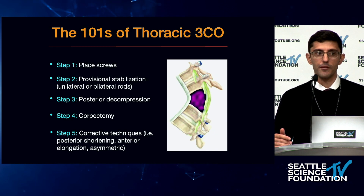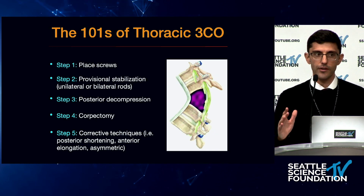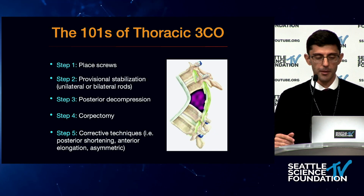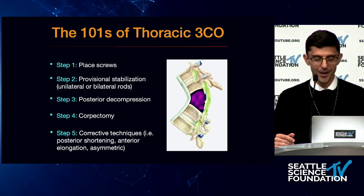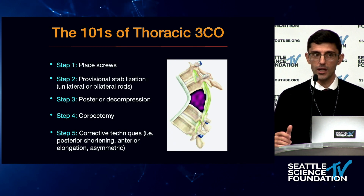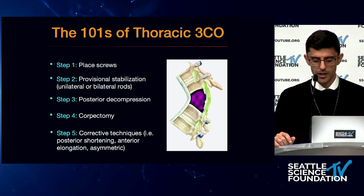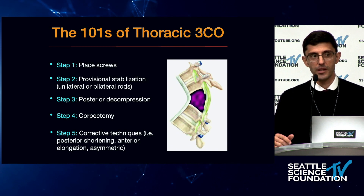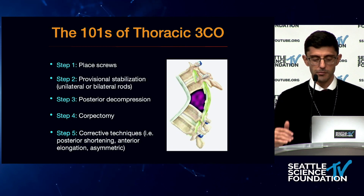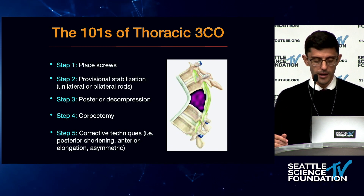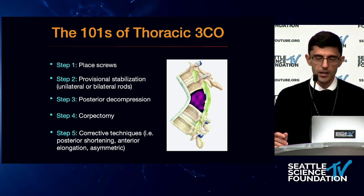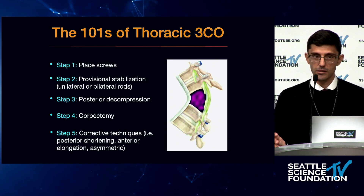Thoracic three-column osteotomies can be performed through a very predictable stepwise approach. Everyone has some modification, but there are five major steps important to understand — the 101 of thoracic three-column osteotomies. The first is to place screws at least three levels above and three levels below the planned VCR site. Patients with poor bone quality should consider going more cranial or caudal with fixation.